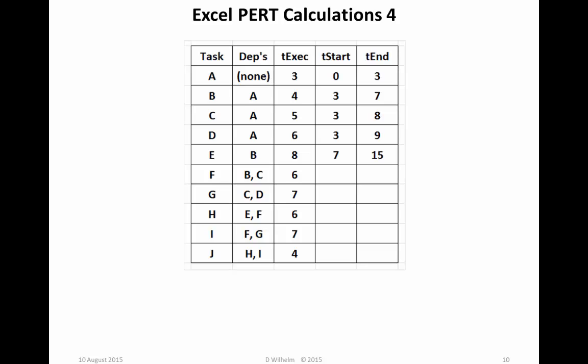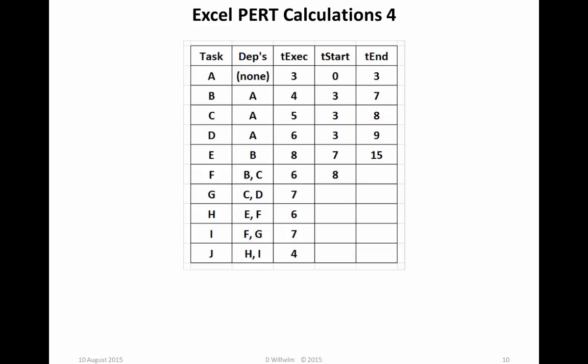Now it's going to get interesting because task F has two dependencies, task B and C. Both must be finished before task F can start. So Time Start F equals the maximum of those two dependencies, max of tEnd B and tEnd C. We enter that formula in the tStart column for task F. And that turns out to be 8. And if we go back and double-check, sure enough, Time End C is greater than Time End B and Time End C is 8. So that's what we see, and that's what we should see.